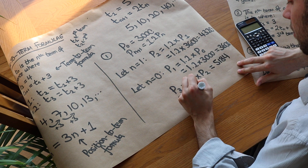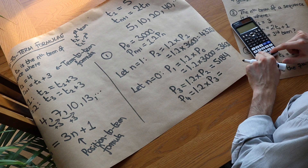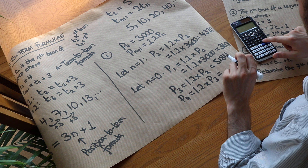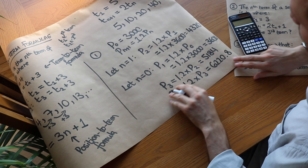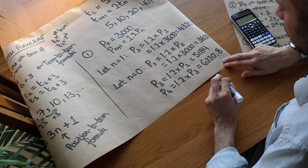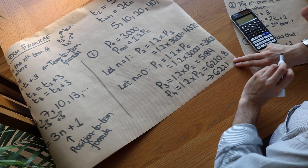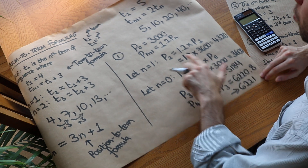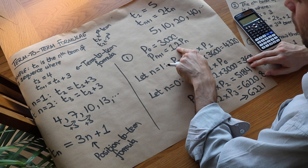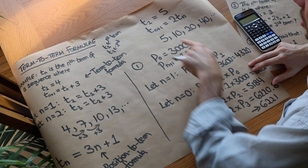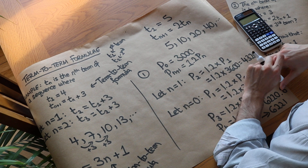Finally, p4 is 1.2 times p3. Multiplying 5184 by 1.2 gives 6220.8. But we can't have a fractional population, so the population after 4 years is 6221 to the nearest whole number. In words, this formula means that the population the next year is 1.2 times the population in the previous year — just like the earlier formula where the next term was 2 times the previous term.